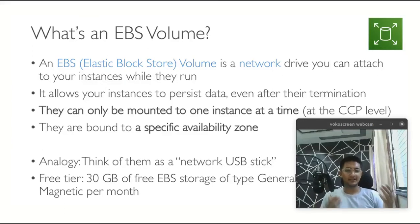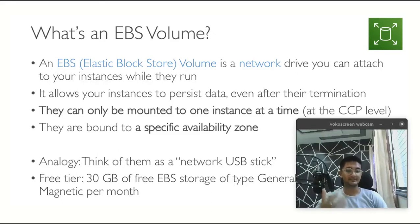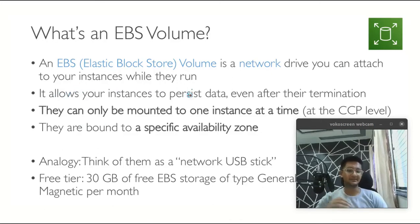EBS, or Elastic Block Store, are volumes and you can consider them as a pen drive or a USB stick. You can create an EBS volume and attach it to any instance. An EBS is a network drive that you can attach to your instance while it runs, and it allows your instance to persist data — meaning you can keep the data even if the instance is terminated or deleted. They can only be mounted to one instance at a time.